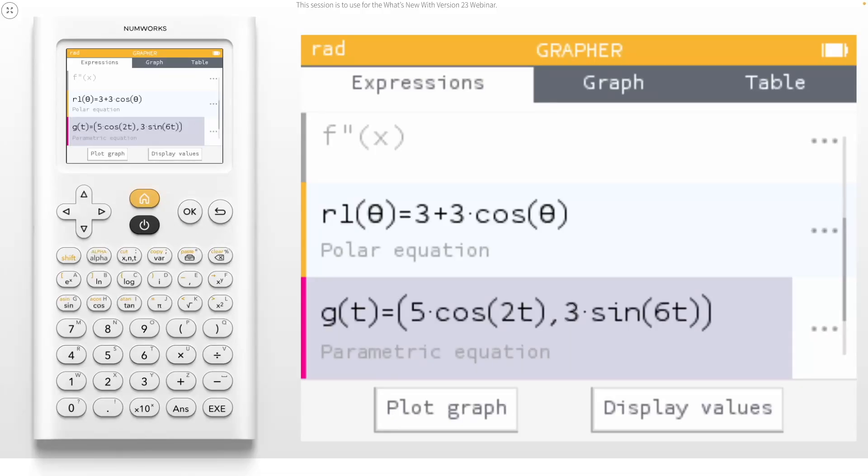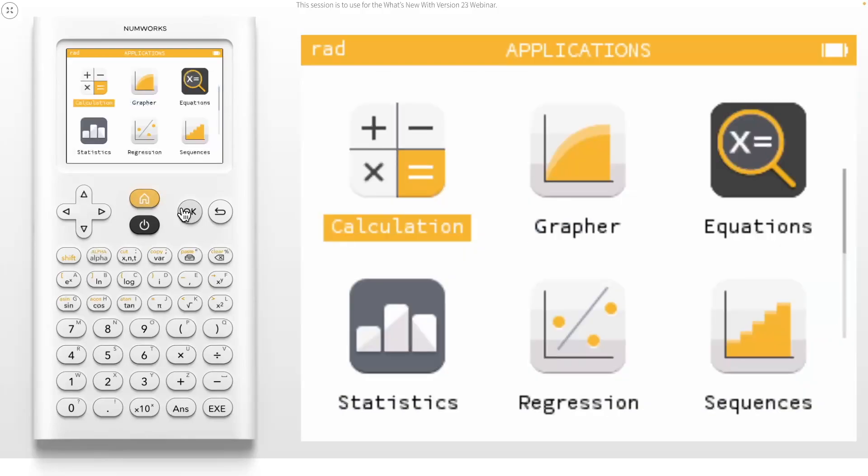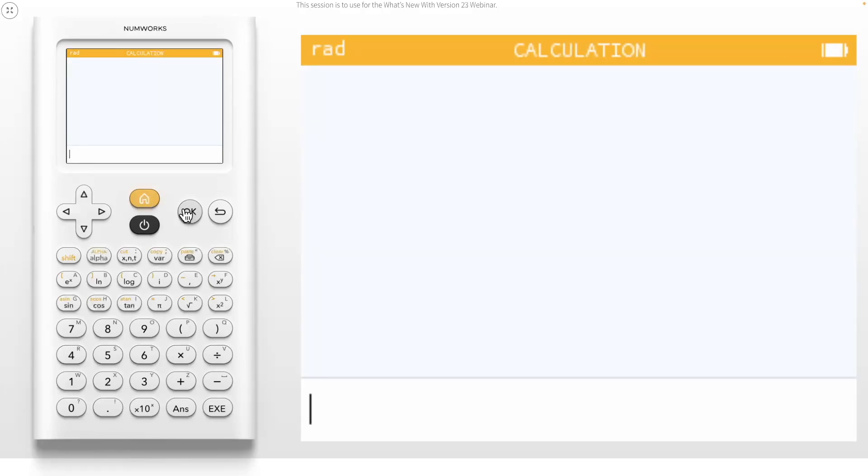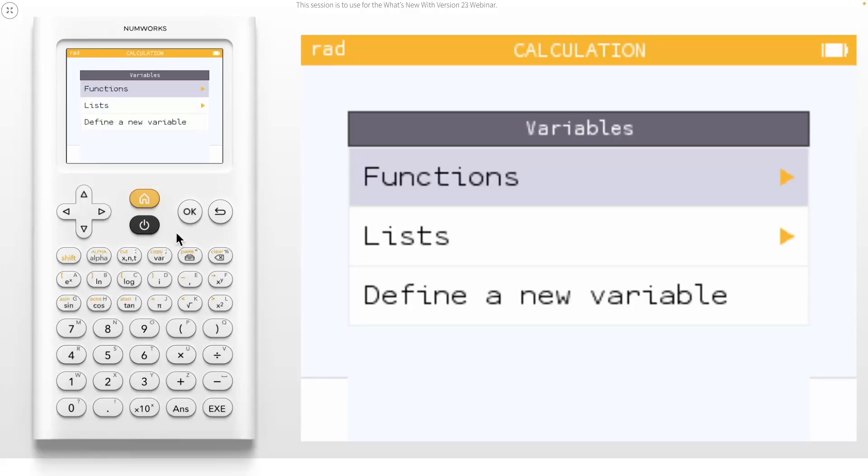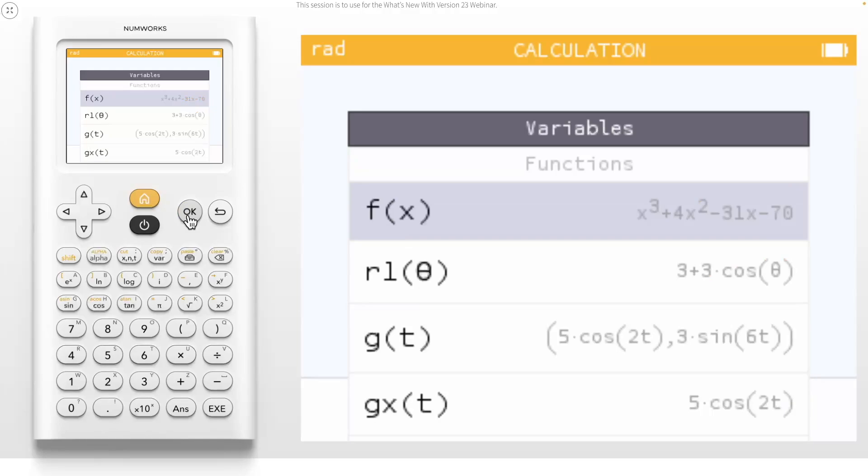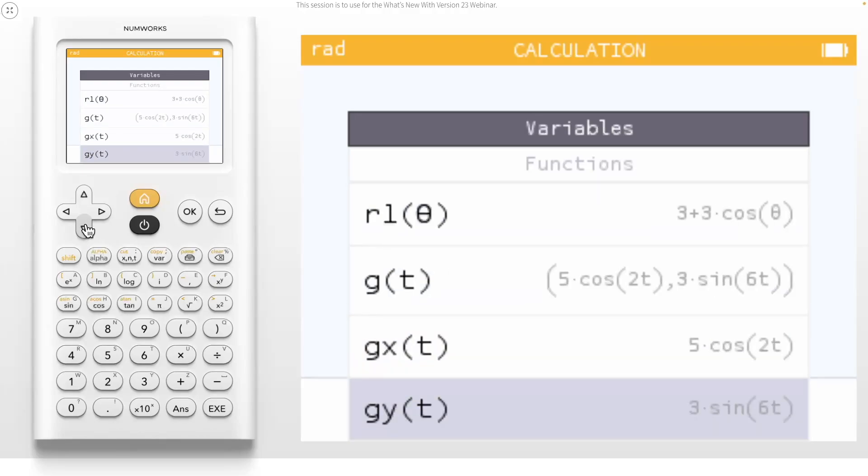Next, let's head to the calculation application. The next update I'll share is the addition of some exciting things in the var menu for BC calculus. Press the var key and navigate into functions. Here you can see that the polar function is now available for calculation. Additionally, the x and y components of g of t are here as well. This is great for formulas like arc length and speed.